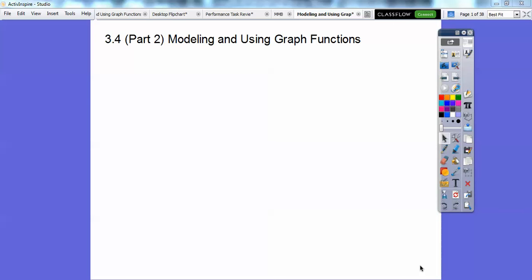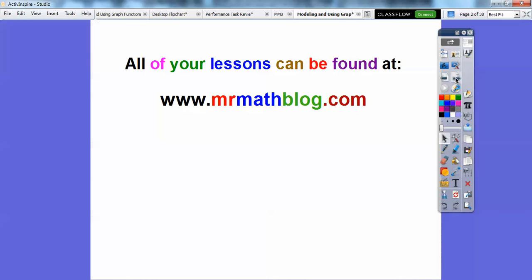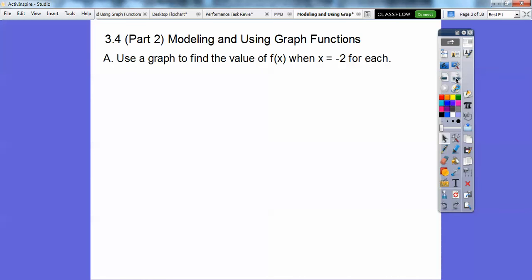Hey everybody. This lesson is the second part of section 3-4, modeling and using graph functions. Don't forget all your lessons can be found at MrMathLog.com. We're going to use a graph to find the value of f of x when x equals negative 2 for each. So we have a couple of problems here. Here's the first one.